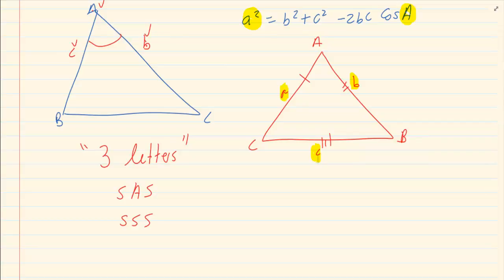You would use the sin rule or cos rule based on the information that you are given. You use the area rule when they are asking you to calculate the area. Don't just randomly decide to use the sin rule or cos rule — it has to be based on the information you are given.